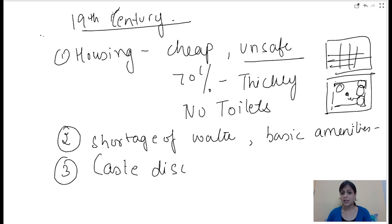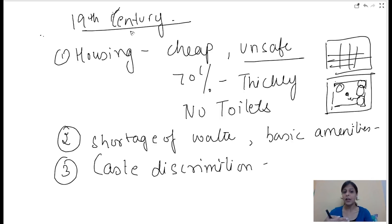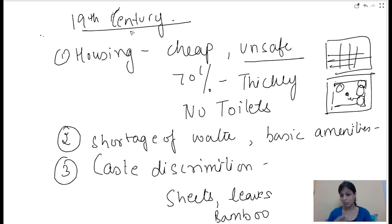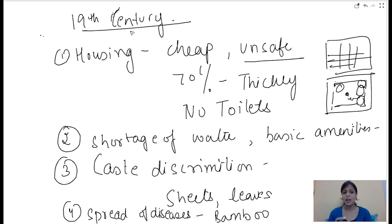Third, there was caste discrimination. Depressed classes had a very tough time finding houses. They were kept out of chawls and had to live in shelters made of sheets, leaves, or bamboo poles. Additionally, there was a constant fear of spread of epidemic diseases like plague and other communicable diseases due to overcrowded, unplanned living conditions.